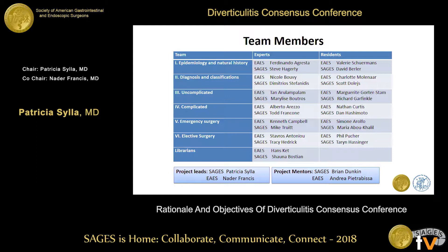The topic of acute diverticulitis was divided up among six different topics: Topic one, epidemiology and natural history; Topic two, diagnosis and classifications; Topic three, uncomplicated and complicated acute diverticulitis; Topic four, emergency surgery for diverticulitis; and finally, Topic five, elective surgery.